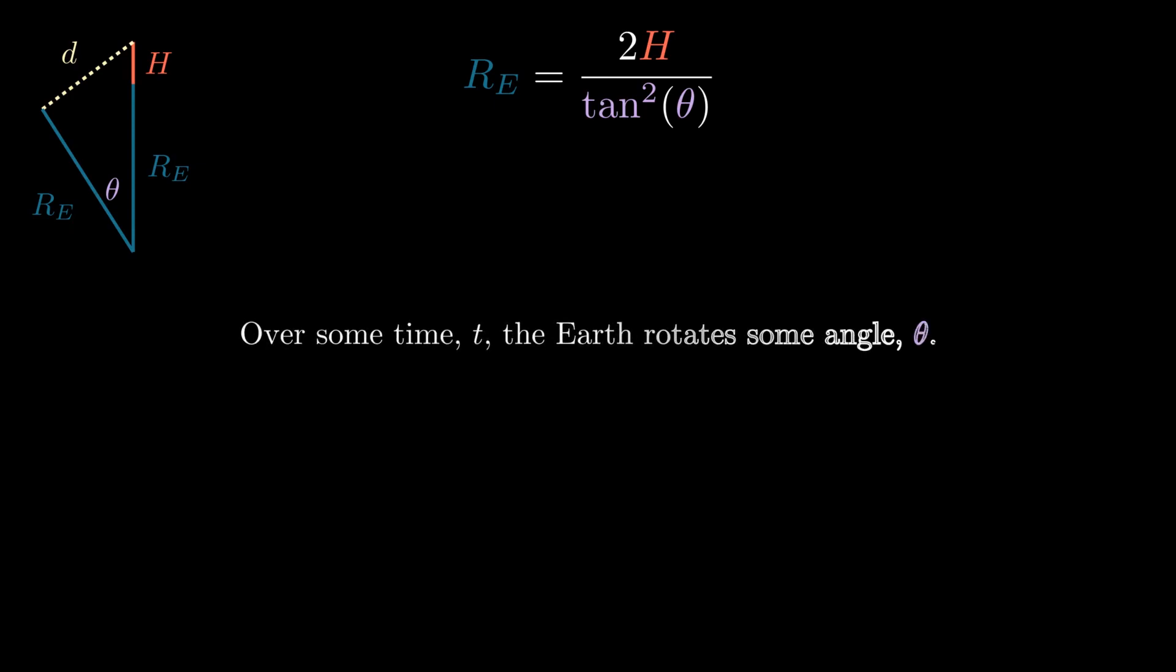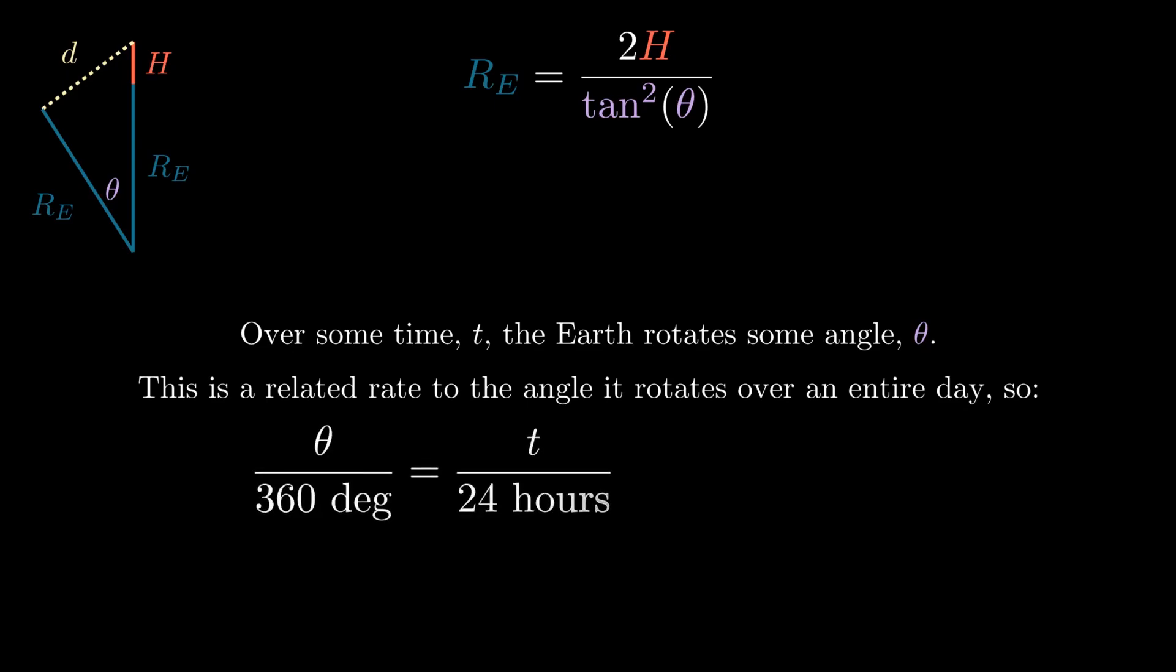So given some time t, the earth will have rotated some angle theta. This is a related rate to the angle it rotates over an entire day. For some angle theta, which is a fraction of the total rotation of 360 degrees, is related to some time t, that is also a fraction of the total time it takes to rotate the 360 degrees, which is one day or 24 hours.